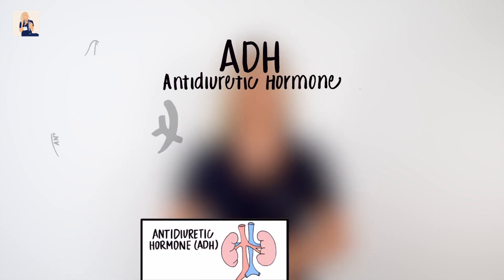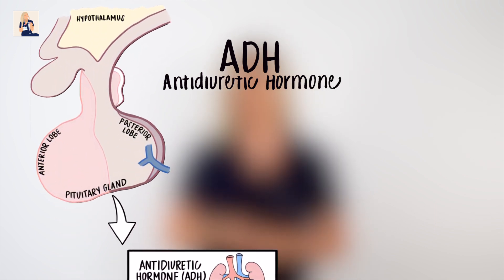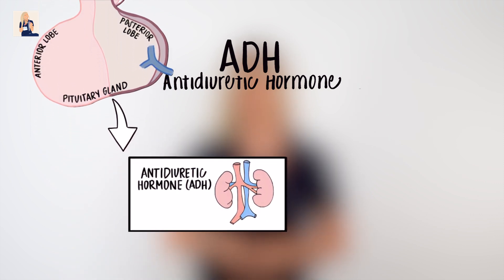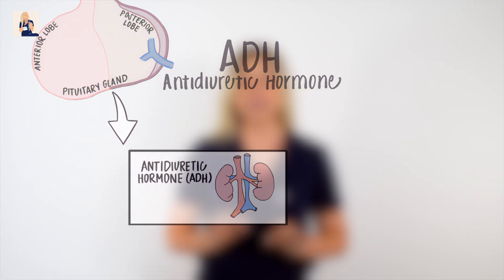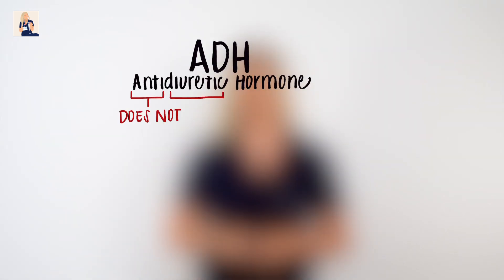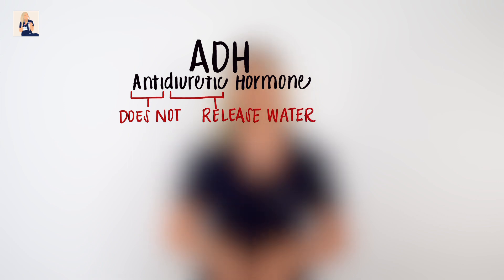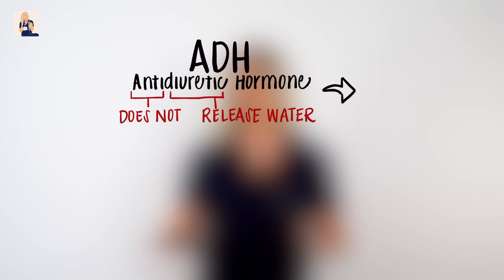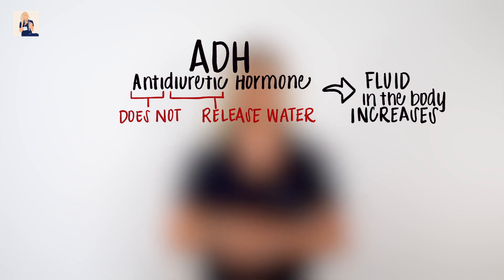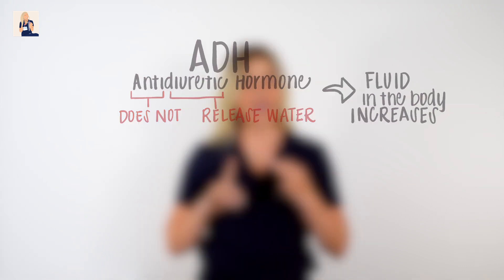ADH is produced in the hypothalamus, stored in the pituitary gland, and released when the body experiences a decrease in blood volume. ADH's function is exactly what it stands for: anti — does not — diuretic — release water. So when ADH is released from the pituitary gland, our body is signaled to not release water, meaning we're holding onto fluid in the body. Let's split the screen and show you exactly how ADH plays a role in both SIADH and DI.